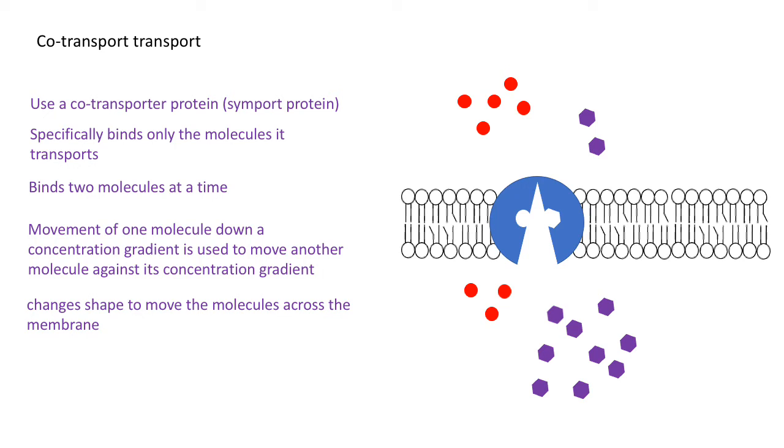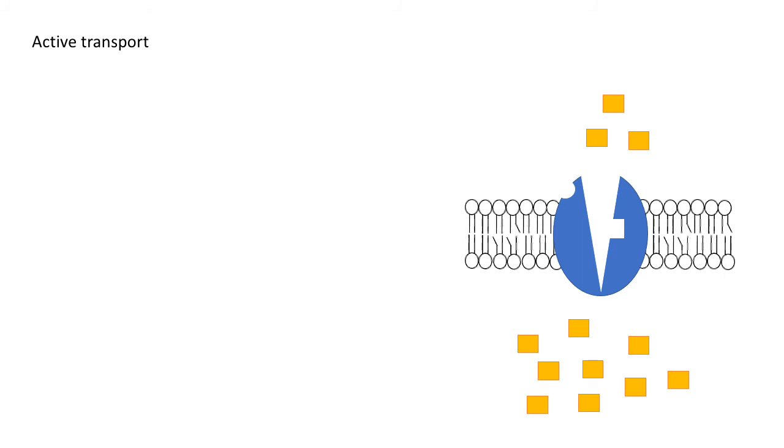So active transport, let's go to that next. For active transport, you need a carrier protein. It's specific for a type of molecule, so there's a binding site to which a specific molecule fits and binds. The thing about active transport is it is an active process; it requires ATP.